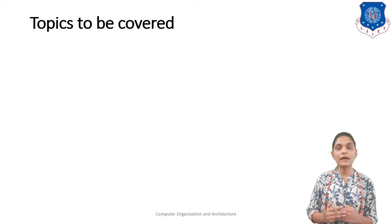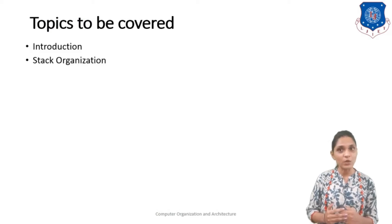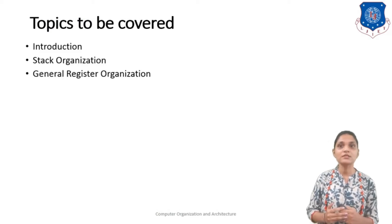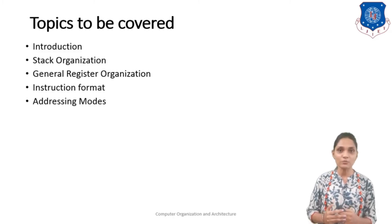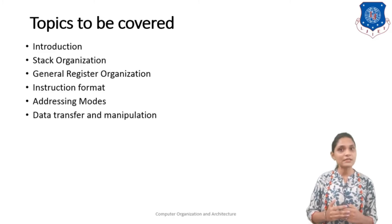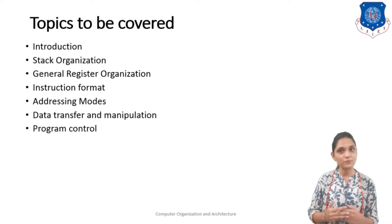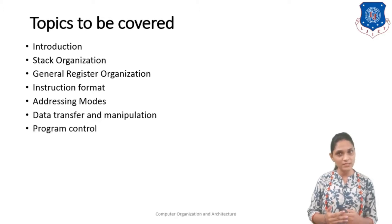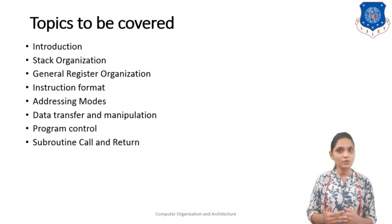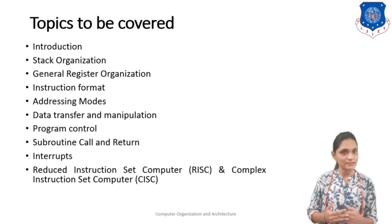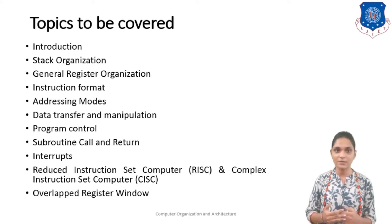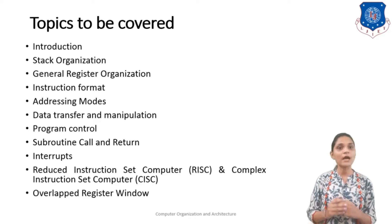The outlines for this unit are: Introduction, Stack Organization, General Register Organization, Instruction Format, Addressing Modes, Data Transfer and Manipulation and Program Control Instructions, Subroutine Call and Return, Interrupt, RISC and CISC Machines, and then Overlapped Register Windows. So these are the outlines for this whole unit.